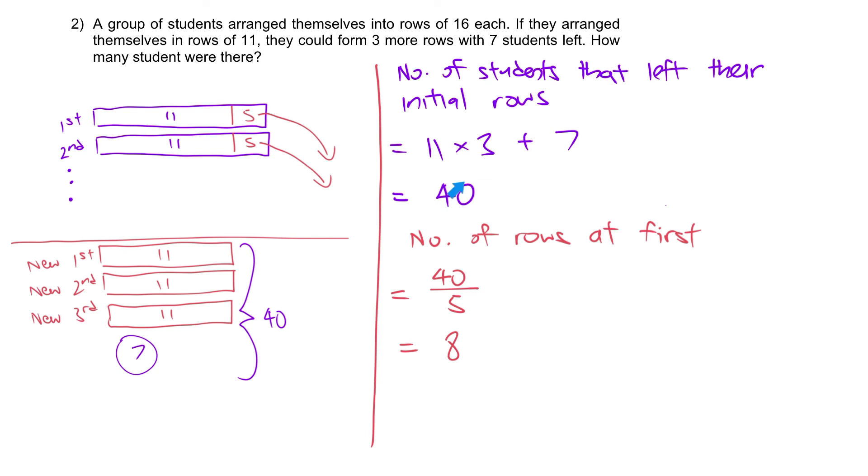If there are nine rows, this will be 45. If there are seven rows, there will only be 37 pupils. So it must be eight rows at first. Hence from there we can calculate the answer.